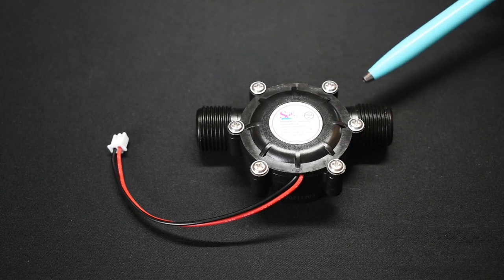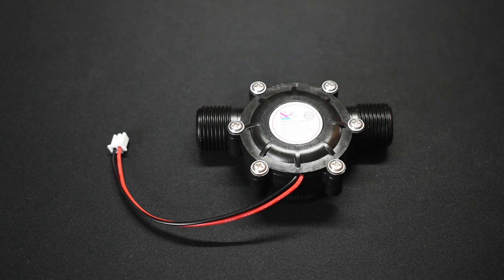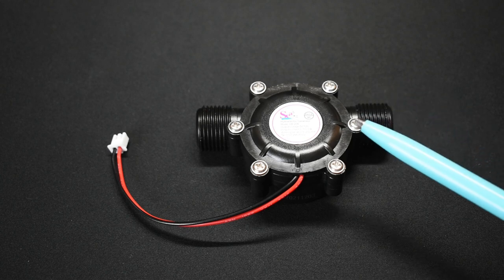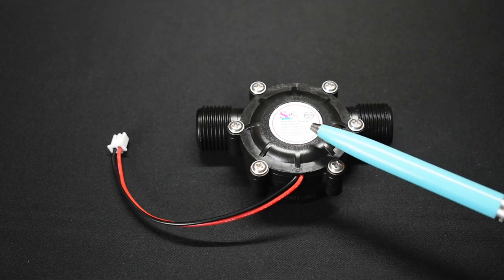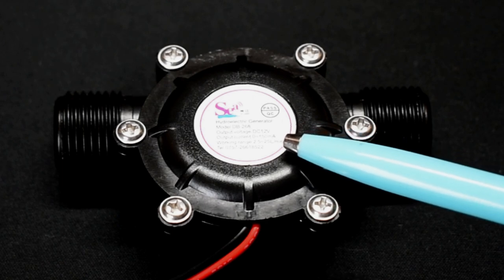As you can see the inlet and outlet on this mini generator uses a half inch male pipe thread. Because it's not a very large generator the output is not going to be high current. You can see 12 volts up to 150 milliamp.